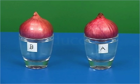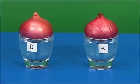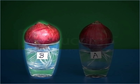After that, leave both the tumblers undisturbed for three to four days. Observe the onion bulbs each day to note the growth of roots.